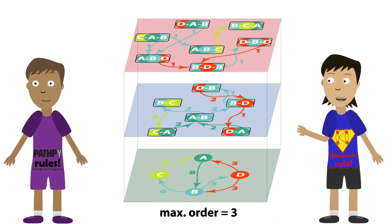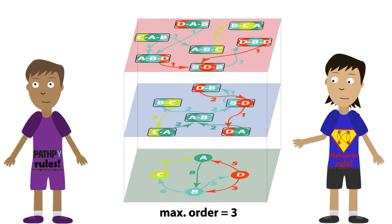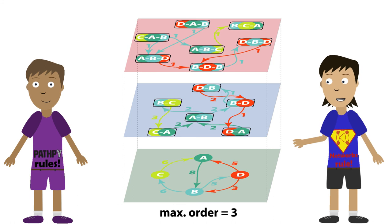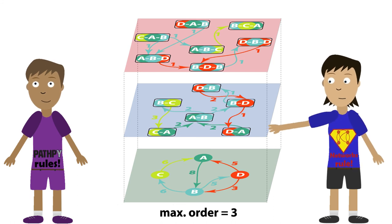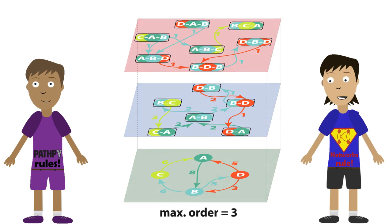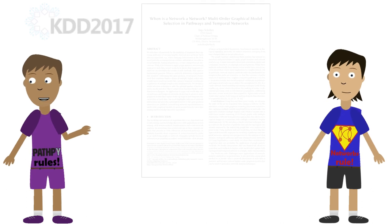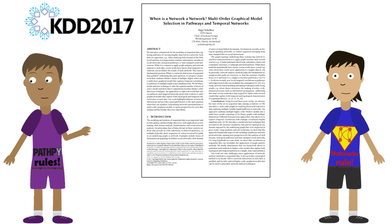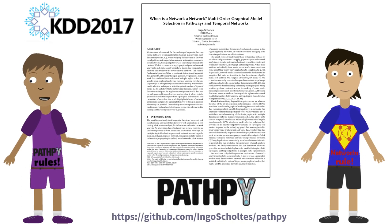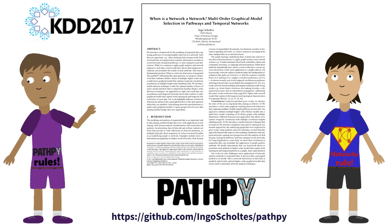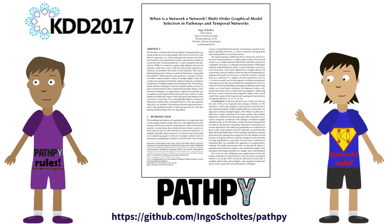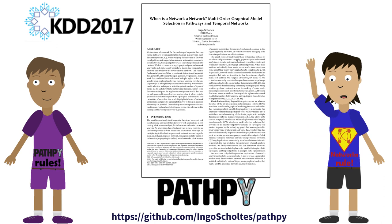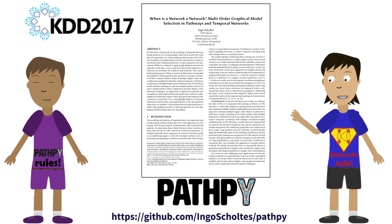I see. This is great. So you answer whether a network is a network. Even better — with your method, I can learn optimal network models to analyze time series data. I just need to apply network analysis techniques to your higher-order graphical models. Yes, that's what I show in this paper. And thanks to the open-source Python implementation PathPy, it is easy to analyze your data on pathways and temporal networks. So, I knew it all along — network analysis rules. Time series data, here I come. Nettie is coming to the rescue. I am the superhero of data science.